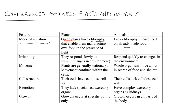Another difference is in irritability. Remember, irritability is response to stimuli. Plants respond very slowly to stimuli, while animals on the other hand respond quickly to stimuli — that is, changes in the environment.